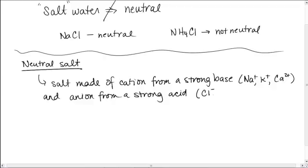And an anion from a strong acid, such as, you know, Cl-. HCl is a strong acid. Br-, HBr, you know, NO3-, HNO3 is strong, etc. Those kinds of things. That's what a neutral salt is made of.